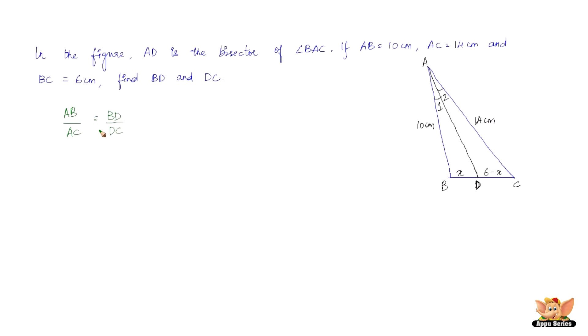So now we've got AB as 10 and we've got AC as 14 and we've got BD as X and we've got DC as 6 minus X. We just have to solve for X.